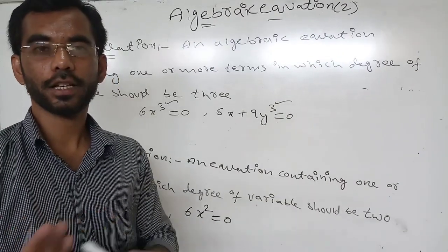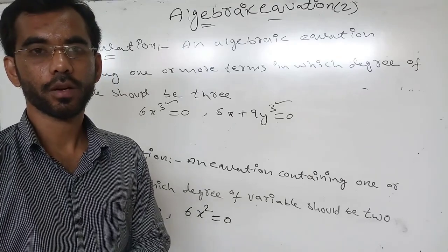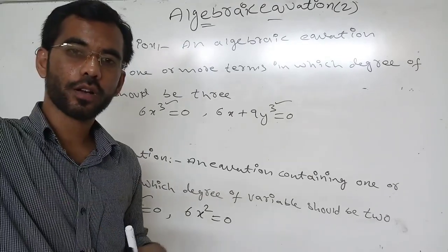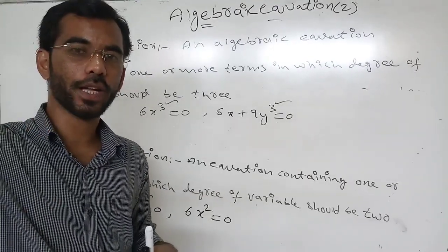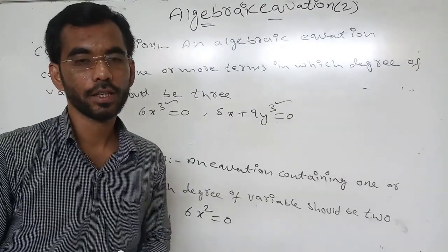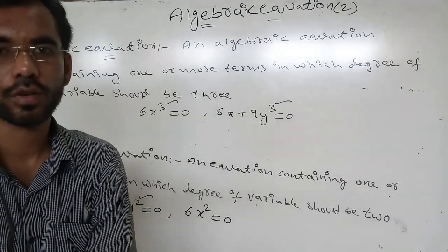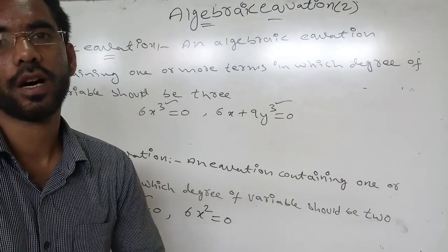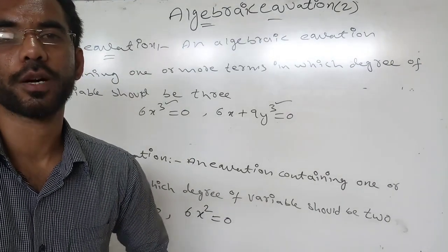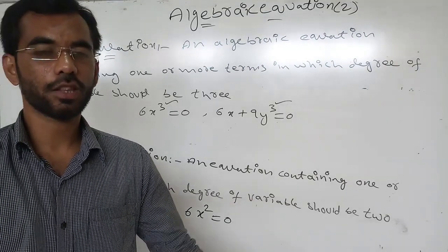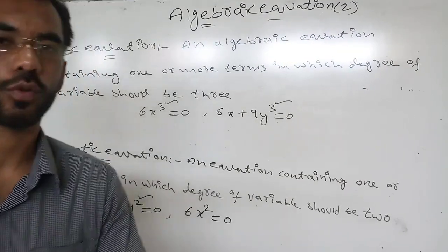Similarly, there are quartic and quintic equations. If the degree is four it is called quartic, and if the degree is five it is called quintic. Hope everyone understood. Please don't forget to subscribe to my YouTube channel. Thank you for watching.